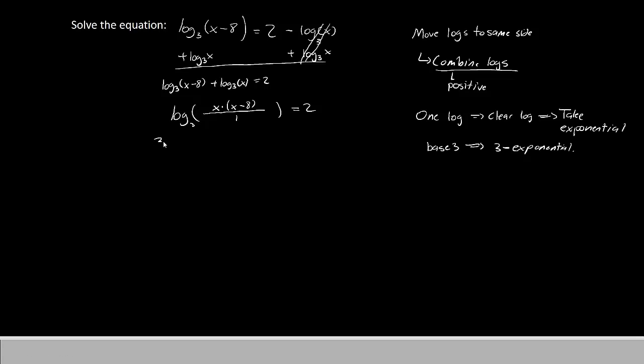So we'll put a 3 underneath the log term and another 3 underneath the 2. So now we have 3 raised to the log base 3 of x times x minus 8 over 1 equals 3 raised to the second power. We can simplify this a little bit to make it look a little less ugly. Remember that if you have a 3 exponential and a log, they are inverses.